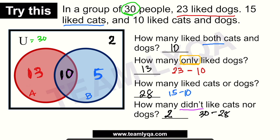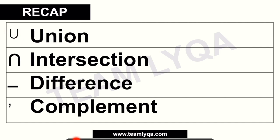So we've completed the Venn diagram. You have to take it one step at a time — each statement matters. Most mistakes happen because details or keywords get overlooked. To summarize: the symbol for union, intersection, difference, and complement each correspond to key words in word problems that tell you what operation to perform.